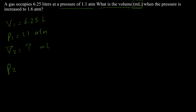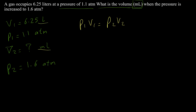This question has the same units for pressure, which is fine. For volume, the unknown v2 is requested in milliliters but v1 is in liters. We can either convert liters to milliliters first or calculate in liters and convert at the end. I'll continue with the given numbers and convert to milliliters at the end.